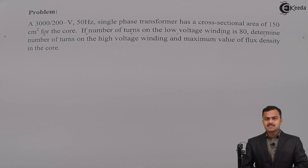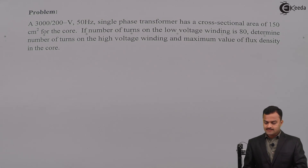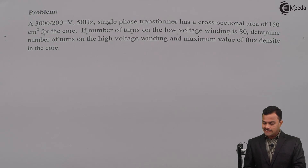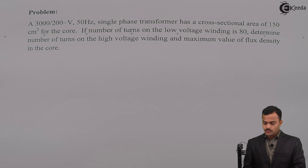Hi friends, in this video we are going to solve a problem based on the EMF equation of a single phase transformer. The problem given is: a 3000/200 volt, 50 hertz single phase transformer has a cross sectional area of 150 centimeter square for the core. If the number of turns on the low voltage winding is 80, determine the number of turns on the high voltage winding and the maximum value of the flux density in the core.